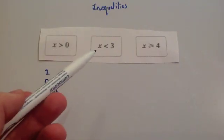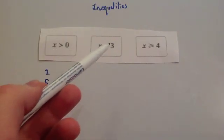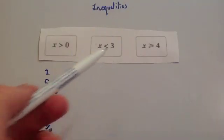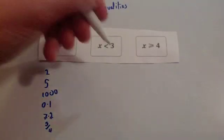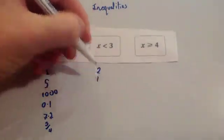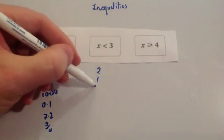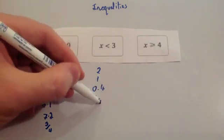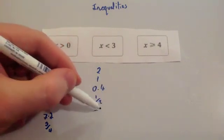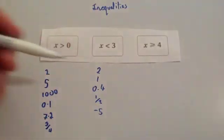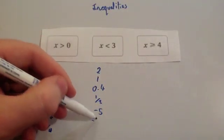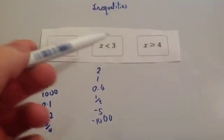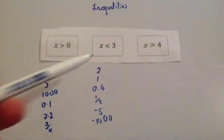This inequality says that x is less than 3, so x can be any number that is less than 3. It could be 2, 1, 0.4, a half, minus 5 — minus 5 is less than 3 — minus 1,000, minus a million. It's any number at all that is less than 3.